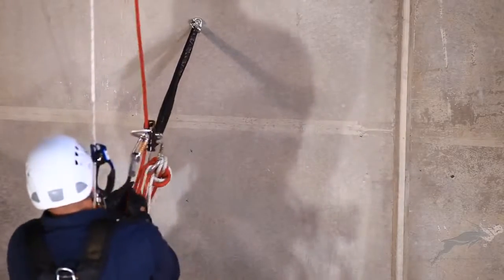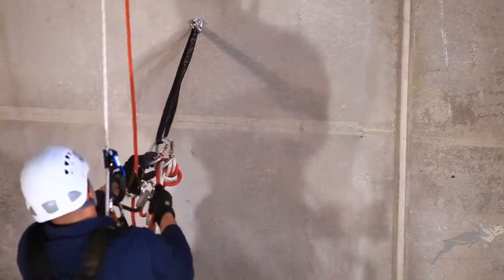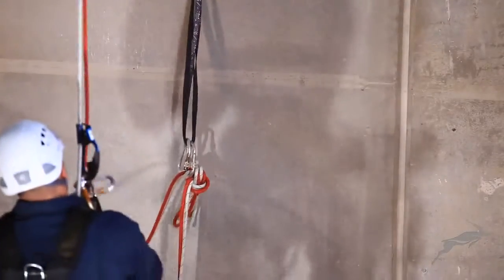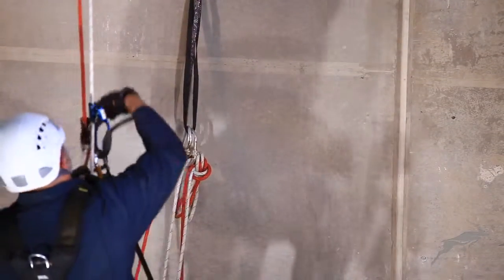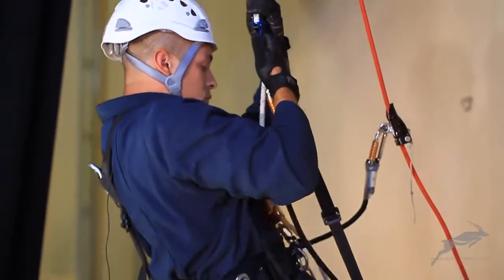The ropes are knotted below the deviation to allow the technician to pull himself back into the deviation during the descent. Continue with the ascent.